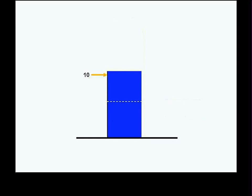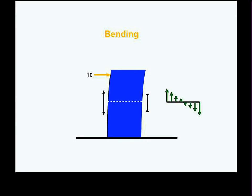Now let me take that same 10-unit force, and instead of applying it axially — down the middle of the column — let me apply it at right angles to the column. This is not going to produce a uniform compressive stress. What this will do is cause the column to bend, so that it is compressed on the surface to your right and stretched on the surface to your left — compression on one surface and tension on the opposite surface.